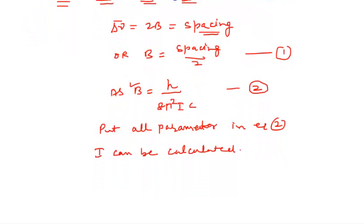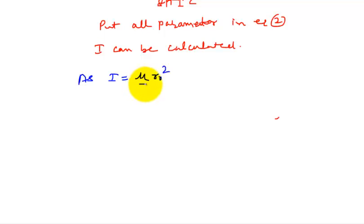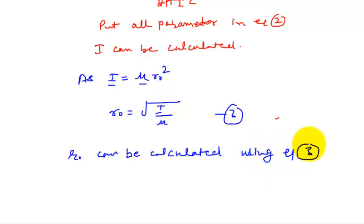I is related to μR₀² (mu times r-naught squared). For any molecule, μ (reduced mass) can be calculated theoretically. I is obtained from equation 2, and then R₀ will be equal to the square root of I divided by μ. This is equation number 3, using which R₀ can be easily calculated. This is the application for calculation of bond length.